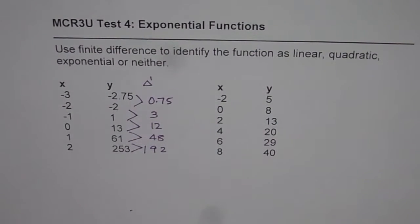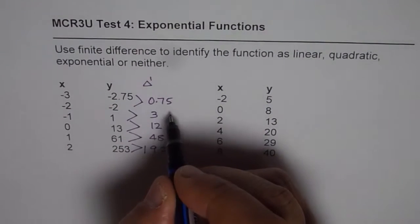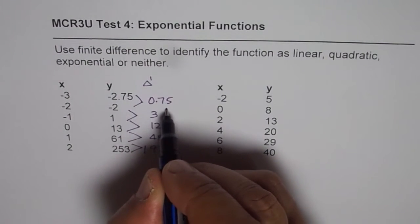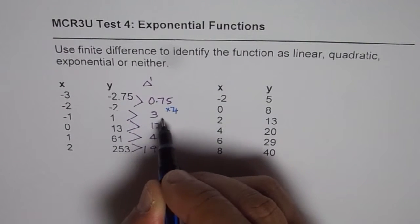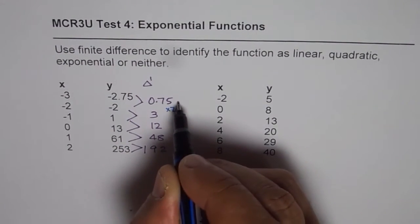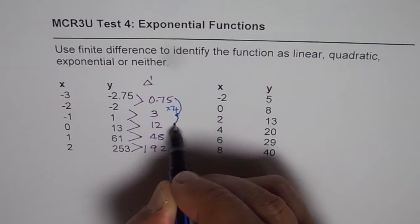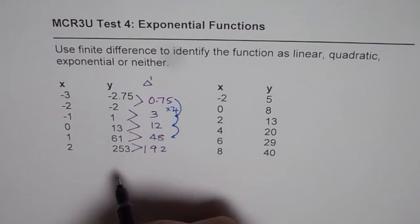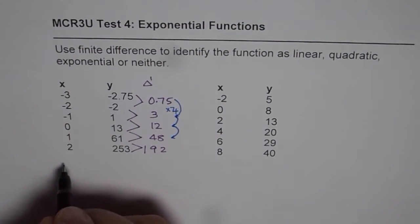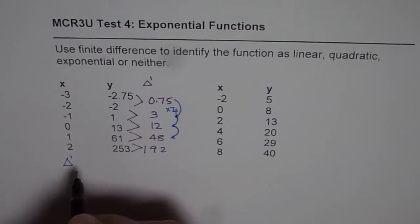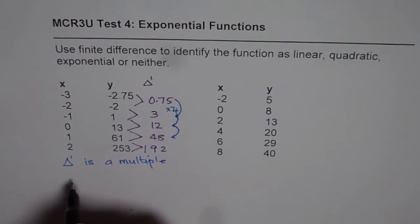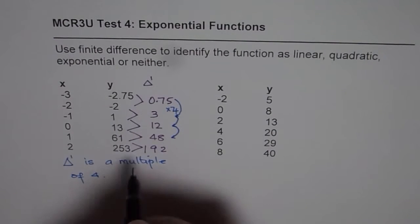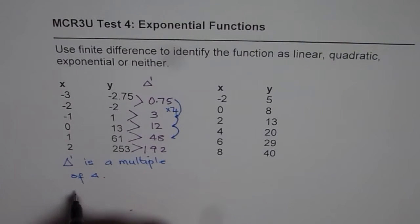Now you can see each number. The finite difference is in a particular order, it is times 4. So 0.75 times 4 is 3. And 3 times 4 is 12. So we do see a trend here that each number is actually a multiple of 4. Since the first difference is a multiple of 4, this particular data represents exponential function.